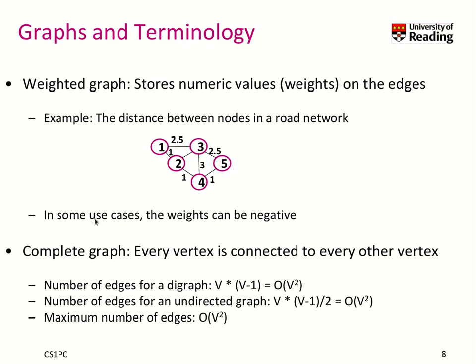This is really relevant for a set of algorithms to treat those cases. So a next definition is a complete graph. It means that every vertex is connected to every other vertex. That means the number of edges for a directed graph would be that each node is connected to V minus 1 nodes, which means we have O(V²) many edges.